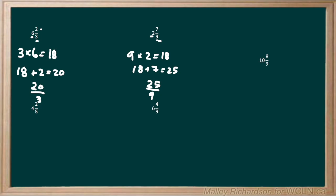Our next question is 4 and 2 over 5. Again we take our denominator of 5 and multiply by the whole number out front. So 5 times 4 gives us 20. Then we add the numerator of 2 onto 20 to give us 22. So 22 is our new numerator and we keep the same denominator of 5, giving us 22 over 5. This makes sense because the numerator 22 is greater than the denominator 5.